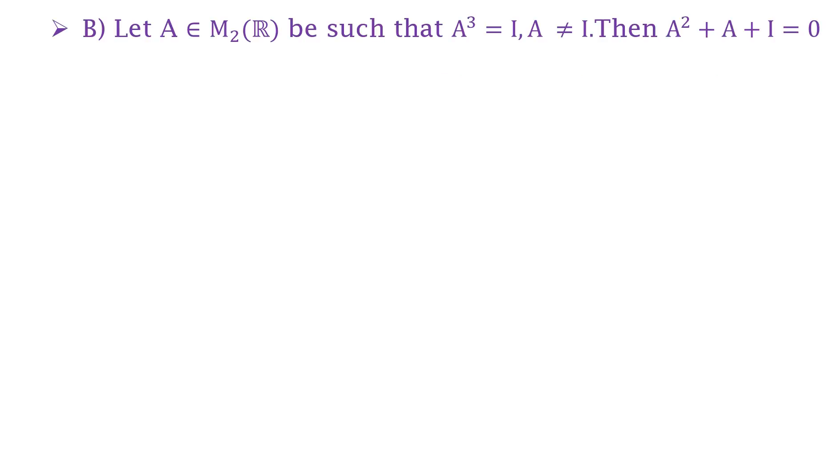Now option B says that A belongs to M₂(ℝ) such that A³ = I and A is again not an identity matrix, then A² + A + I = 0. If this holds,